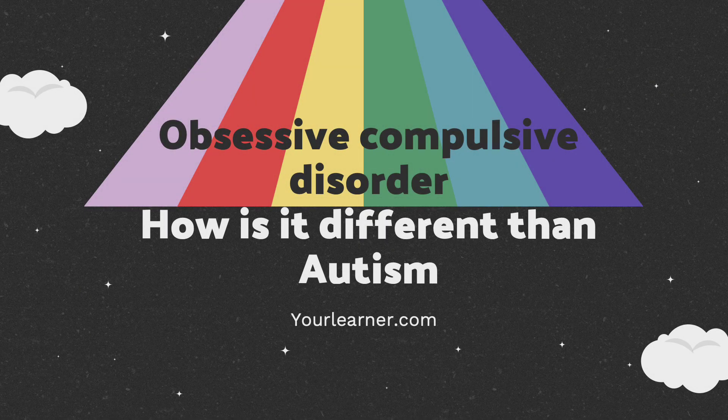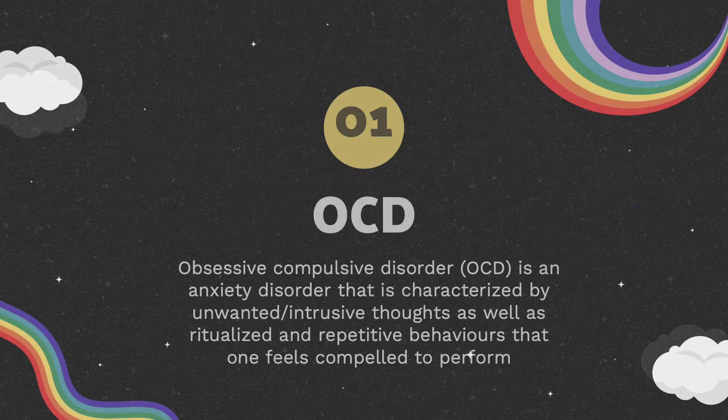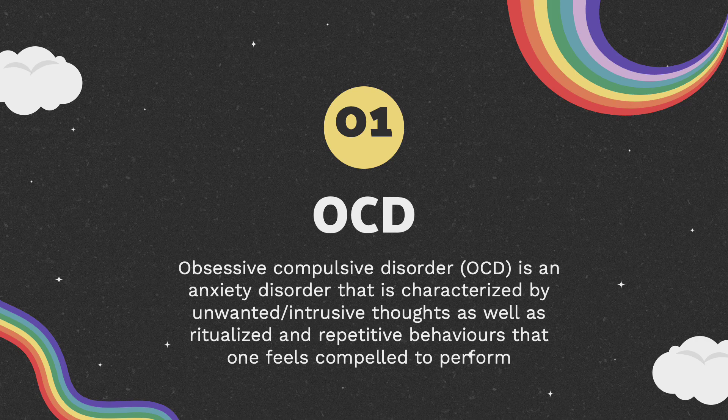Hi, my name is Carly, and today I'm going to talk about obsessive compulsive disorder, also known as OCD, and how it is different than autism. OCD is an anxiety disorder that is characterized by unwanted and intrusive thoughts as well as ritualized and repetitive behaviors that one feels compelled to perform.